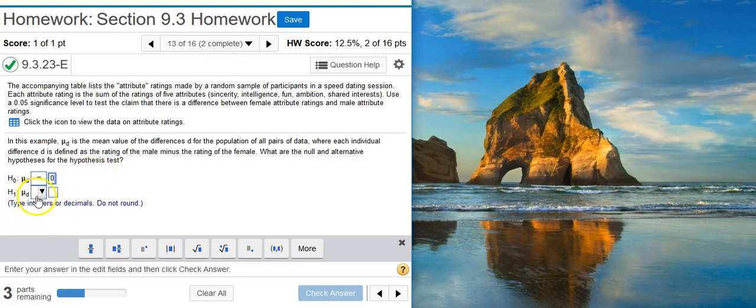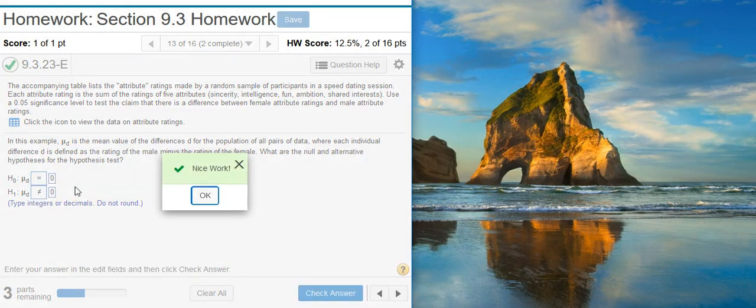The alternative hypothesis, let's see if we can match the claim. The claim here is that there's a difference between female attribute ratings and male attribute ratings. So there's some difference. It could be that the female is greater than the male or the female is less than the male. It doesn't matter which side you're on, it's just one or the other. And if you're on either side, there's some difference there. That means we have a two-sided test, and this is going to be therefore not equal to, again, the same value, zero. Nice work!